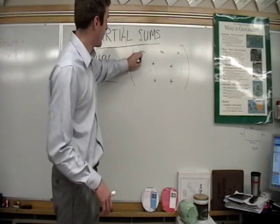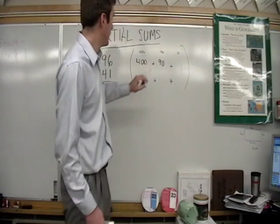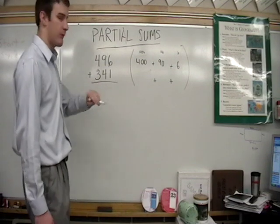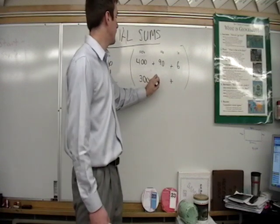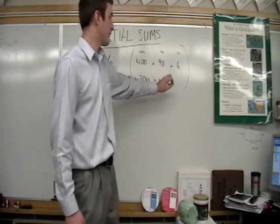Well for the hundreds we have 400. For the tens we have 90, and for the ones we have 6. 341, we have 300, we have 40, and then for the ones we have one.